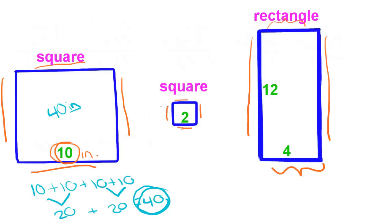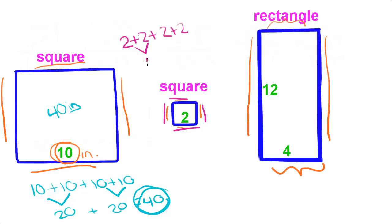For the small square in the middle, it's two units long. So we do 2 plus 2 plus 2 plus 2. 2 and 2 is 4, plus 2 and 2 is 4, and 4 and 4 is 8 inches.